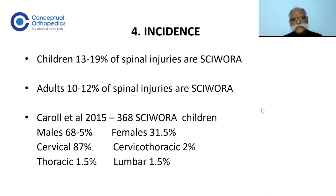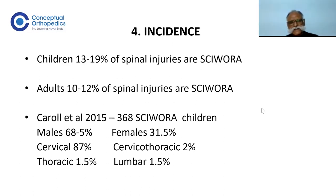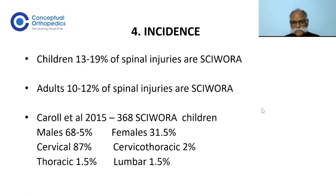Spinal injuries in children that are SCIWORA range from roughly 13 to 90%, while in adults about 10 to 12% of spinal injuries are SCIWORA. Carol in 2015, in a report of 368 SCIWORA children, found that males predominated at 68.5%, and injury took place mainly in the cervical region at 87%, while it was seen rarely in the cervicothoracic, thoracic, and lumbar regions.